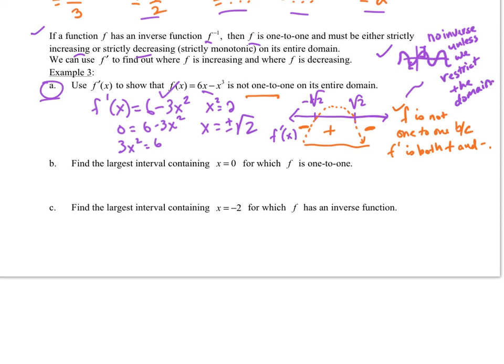How did we show that? That's because f is not one-to-one, or f is not one-to-one because f prime is both positive and negative on that set over real numbers. So then it says find the largest interval containing x equals 0 for which f is one-to-one. Well, that would be right in here. So that would just be from negative square root of 2 to square root of 2. Then find the largest interval where x equals negative 2 is contained in there for which f of x has an inverse function. Well, negative 2 is over here, so that's just going to be negative infinity up to negative square root of 2.